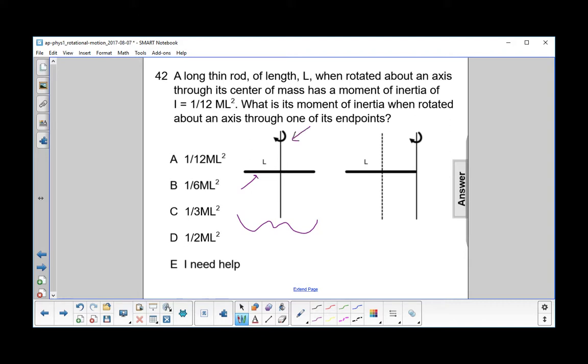What is its moment of inertia when rotated about an axis through one of its endpoints? That's this second picture, and what's important to note here is the distance between the center of mass and the new rotation axis is L over 2.